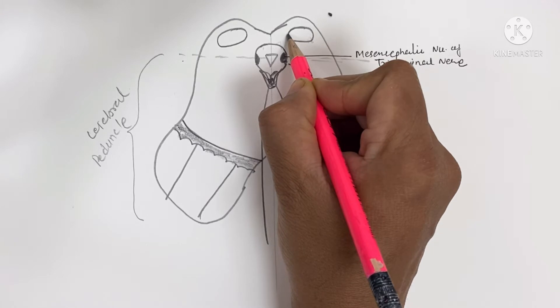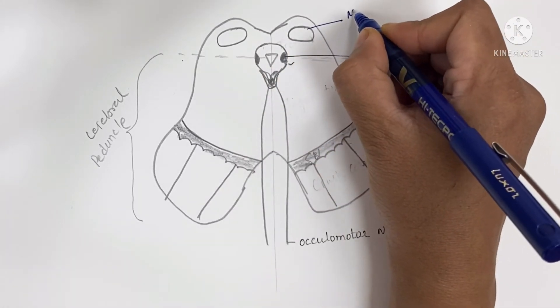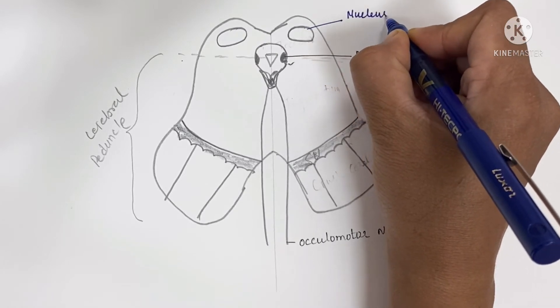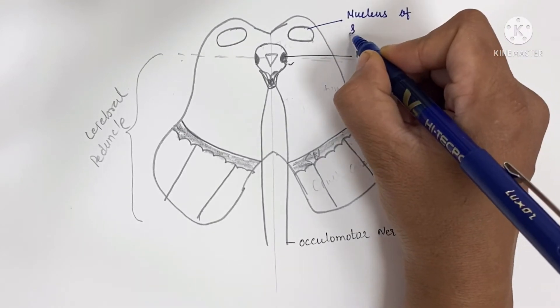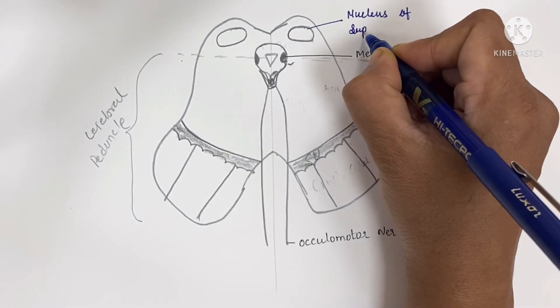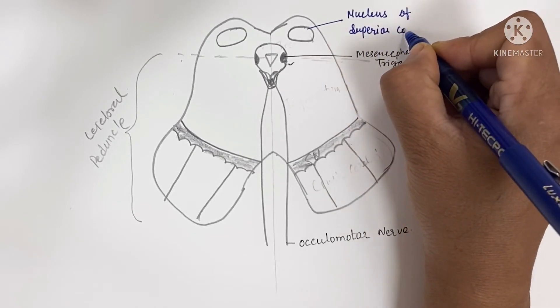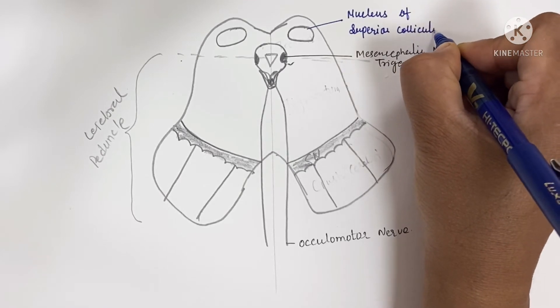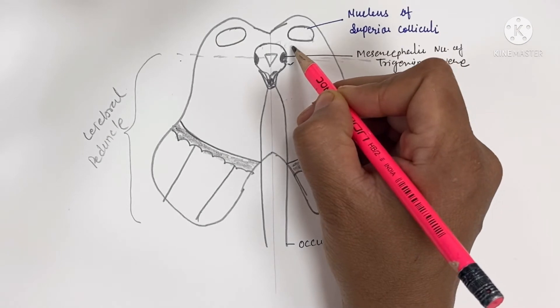Afferent fibers arise from the retina through the lateral geniculate body, from the spinal cord, from the frontal and occipital visual cortex, and from the inferior colliculus. Efferent fibers form the tectospinal and tectobulbar tracts, which are responsible for reflex movements of the eye, head, and neck in response to visual stimuli.